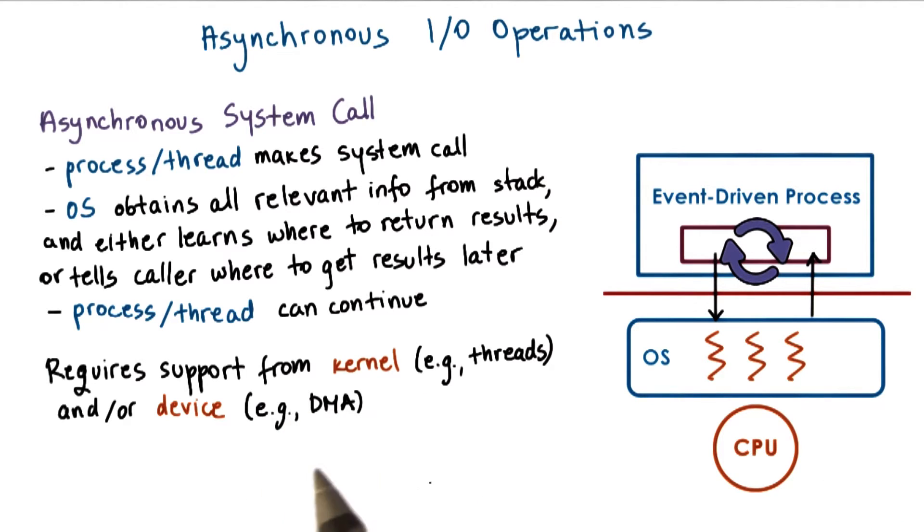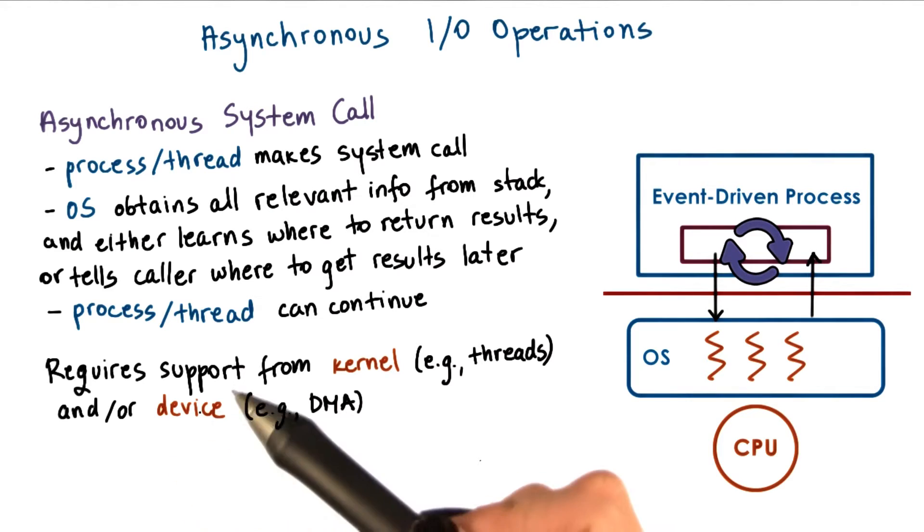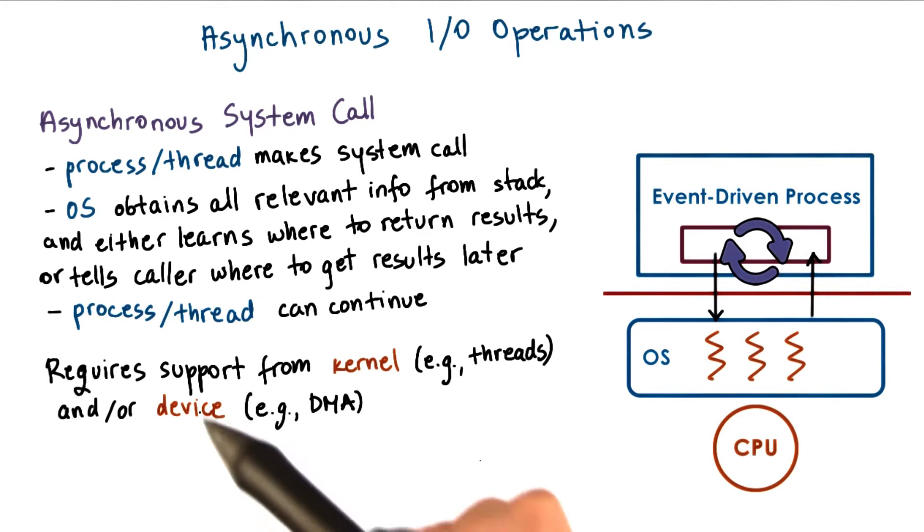Also, asynchronous operations can benefit by the actual IO devices. For instance, the caller thread can simply pass some request data structure to the device itself, and then the device performs the operation and the thread at a later time can come and check to see whether the device has completed the operation.